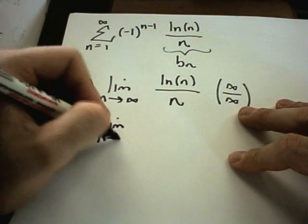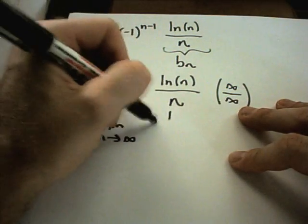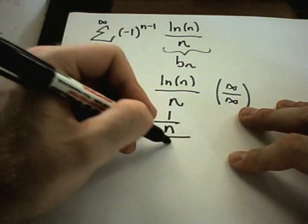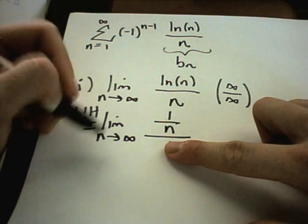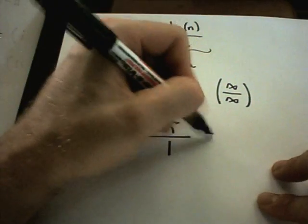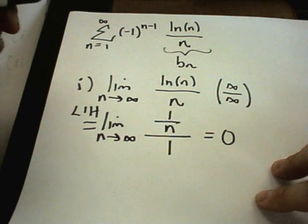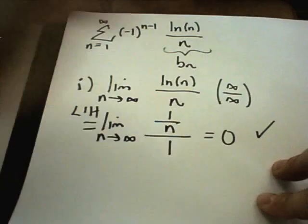And L'Hopital's rule says just take the derivative of the top, that's 1 over n. The derivative of the bottom, that's just 1. Well this is equivalent to just plain old 1 over n. And as n goes to infinity, this certainly is going to equal 0. So criteria 1 is down.